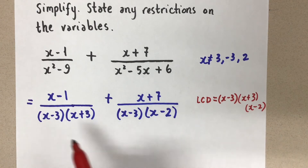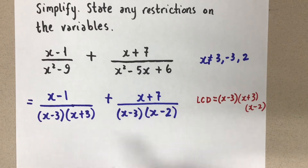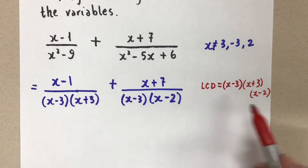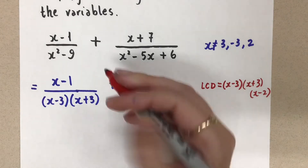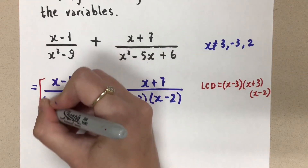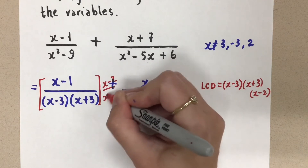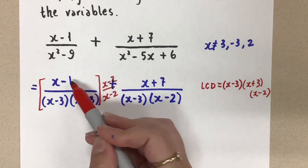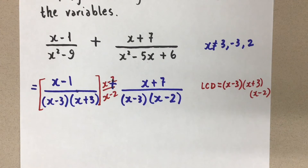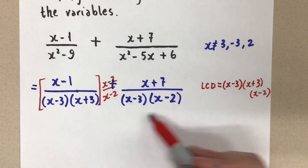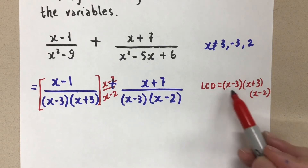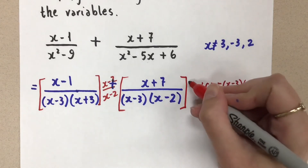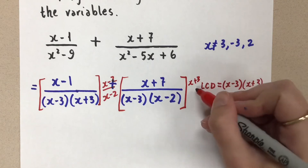That is the lowest common denominator that exists between the two denominators that I have here. If I need this denominator to have an x minus two on it, which it doesn't right now, I need to multiply this whole expression by x minus two over x minus two. That gives me the extra x minus two denominator factor in there, and then I have to multiply the numerator by x minus two. Make sure you use brackets. And for this fraction, I have the x minus three and the x minus two, but I don't have the x plus three. So to get it, I need to create that equivalent fraction by multiplying by x plus three over x plus three.